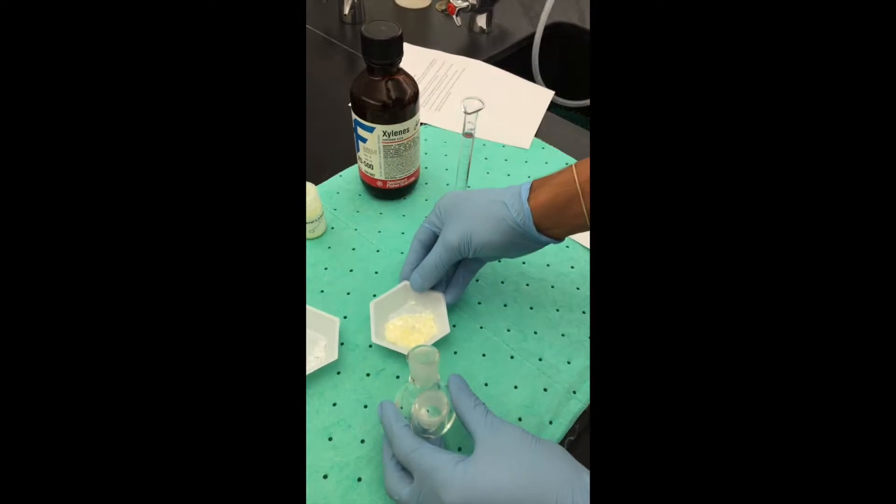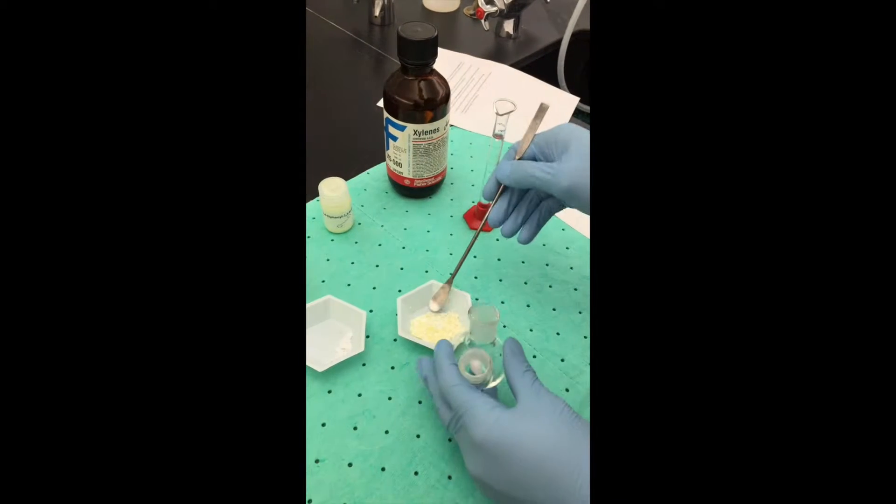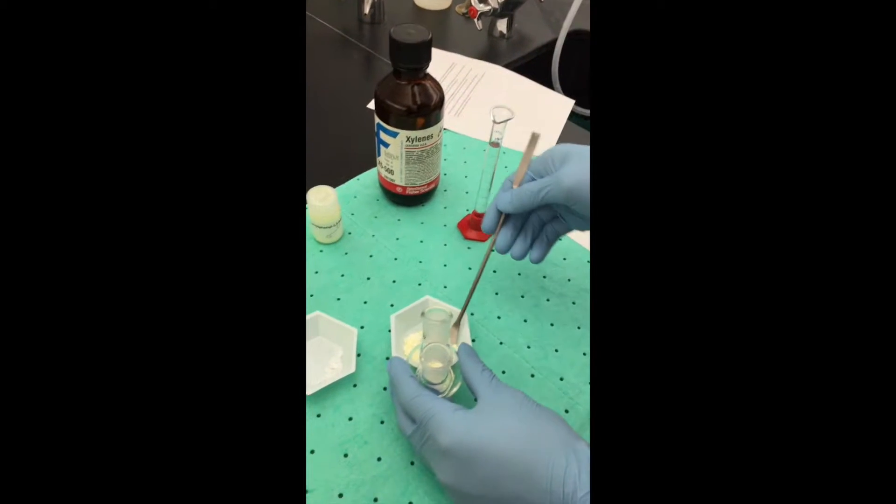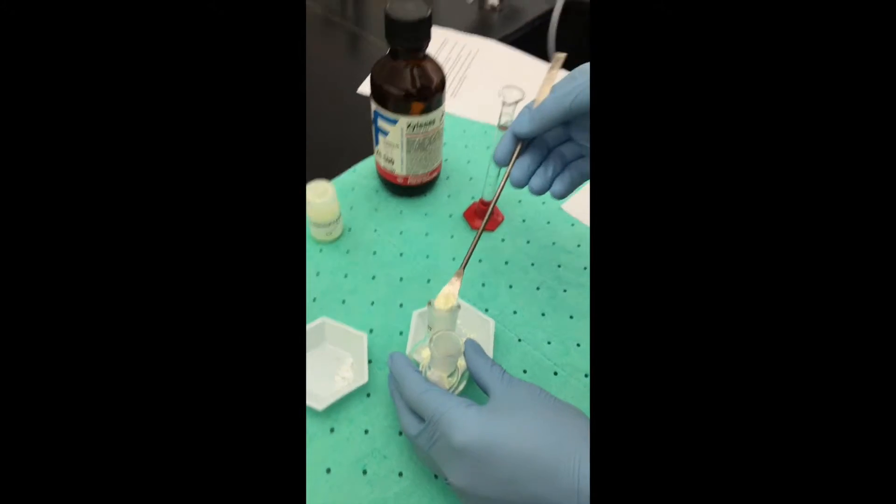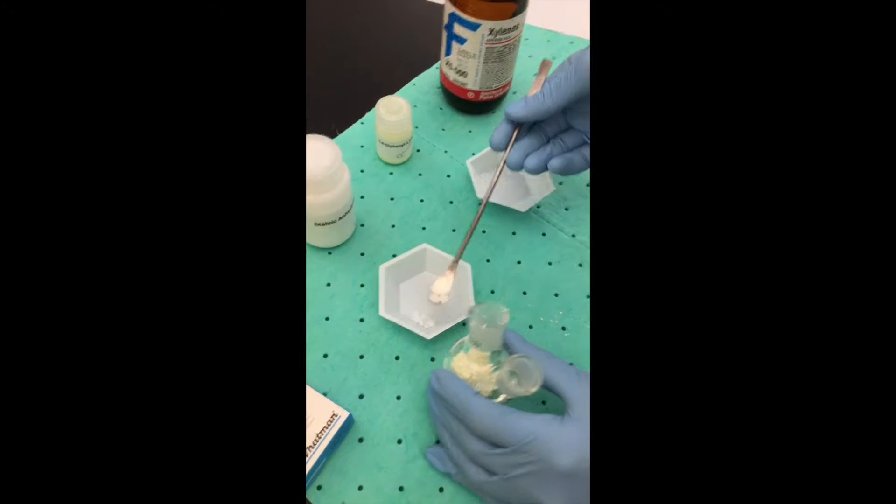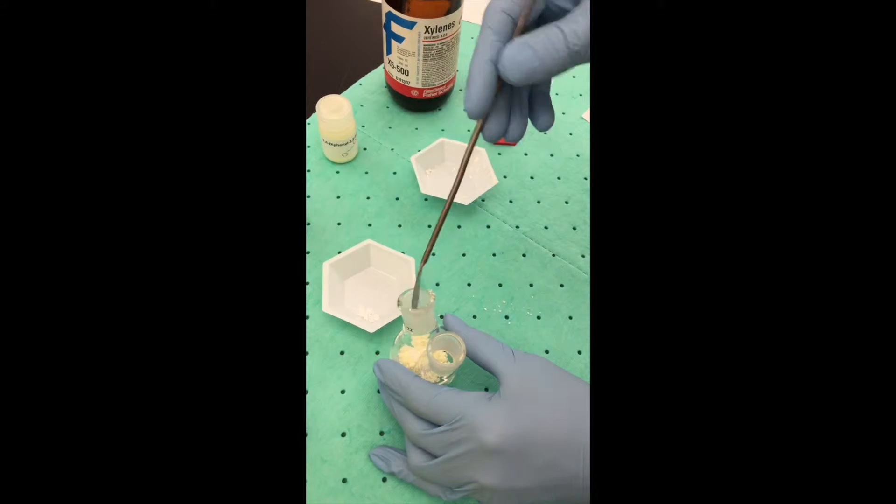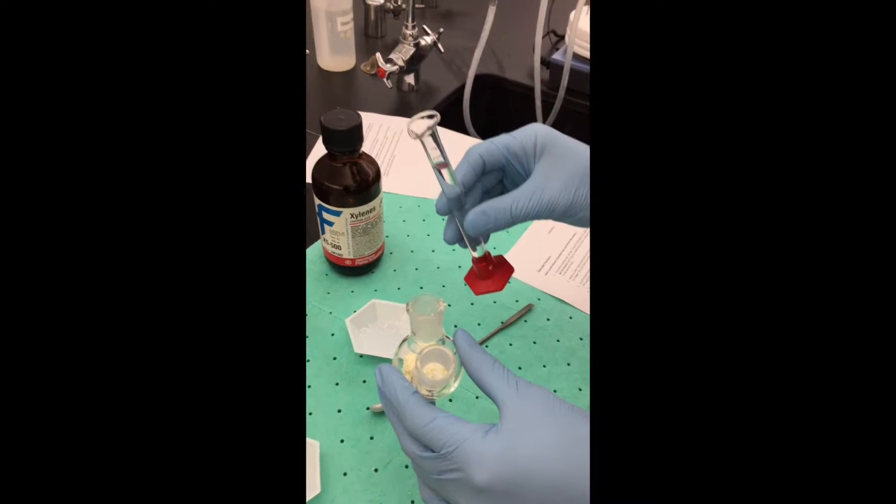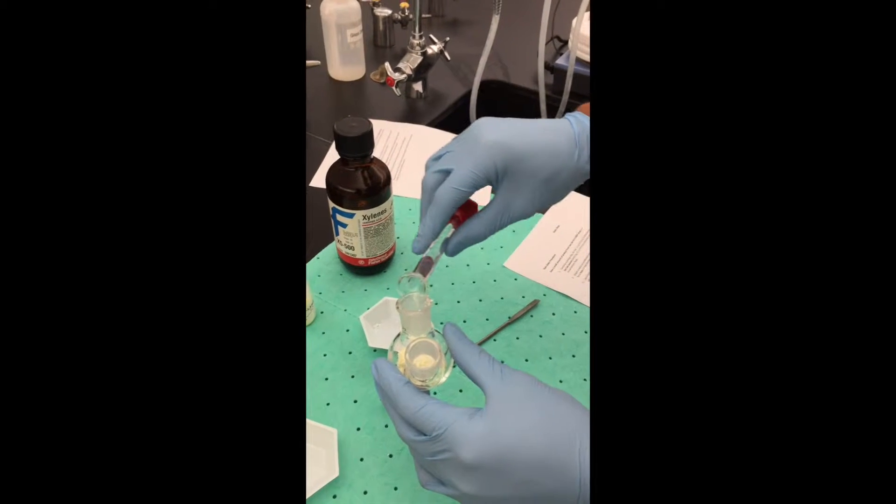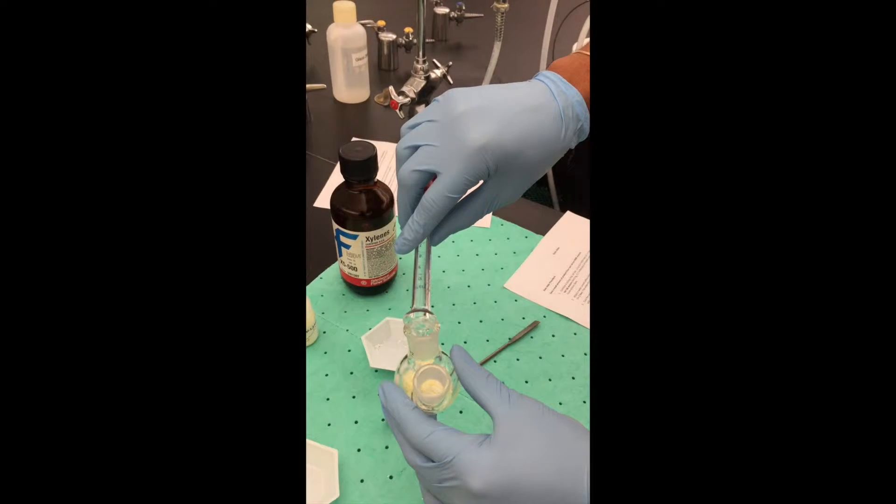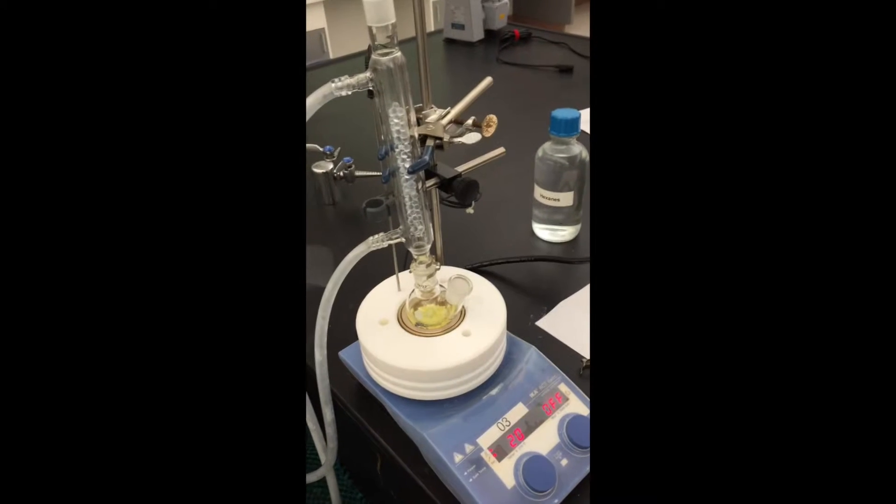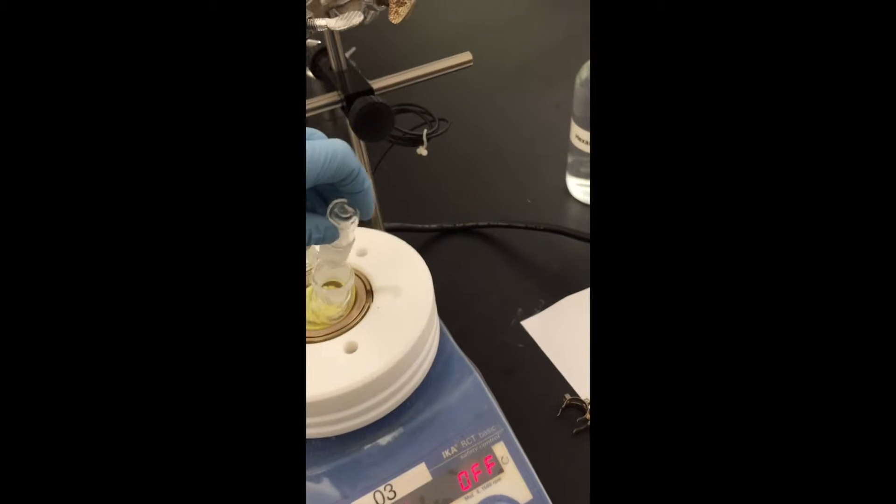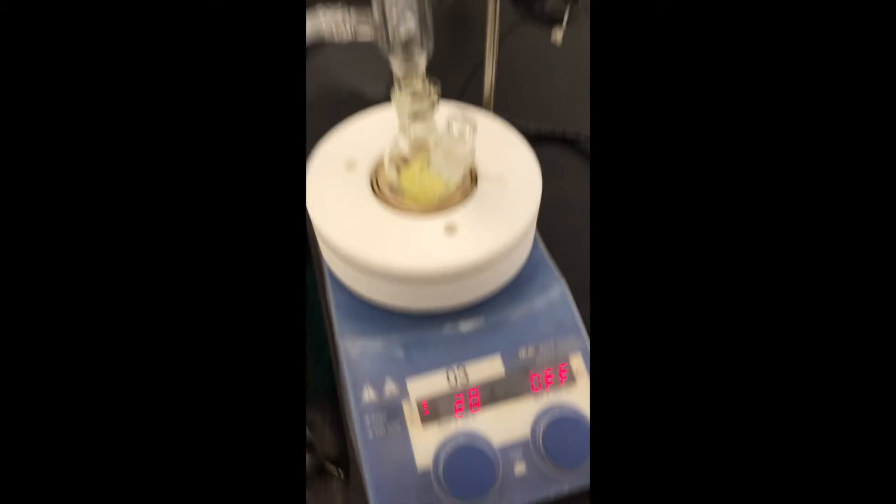Alright, so we are going to put the 1 gram of the 1,4-diphenylbutadiene in there. We are going to put the 0.5 grams of Maleic Anhydride in. Lastly, we are going to put the 10 milliliters of xylenes in. Okay, we are all set. So we are going to cap to reflux for an hour.